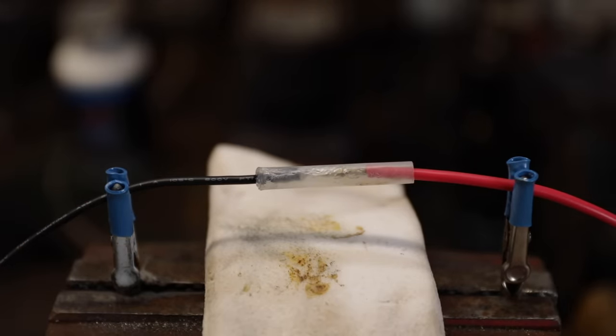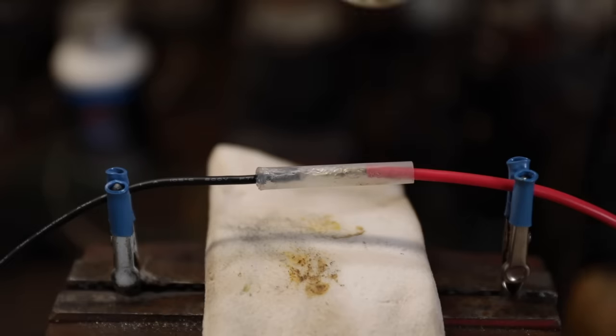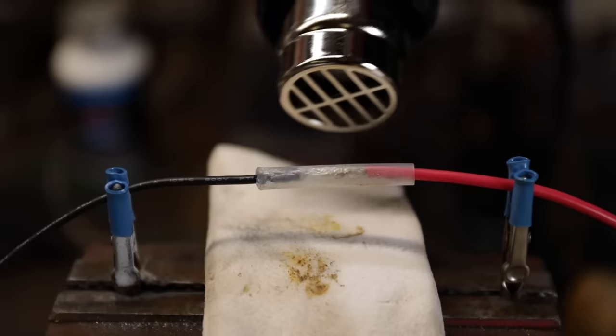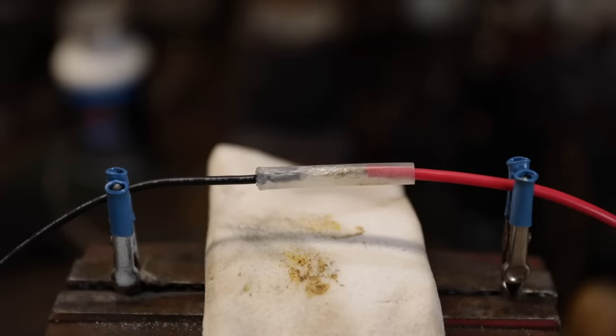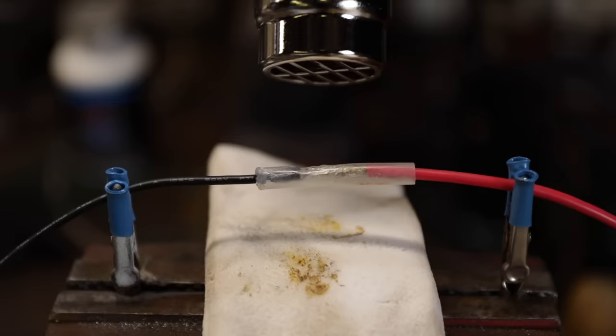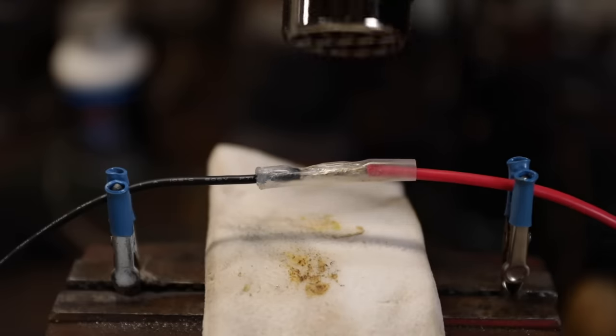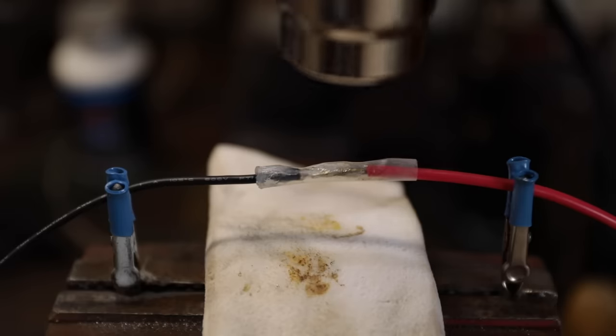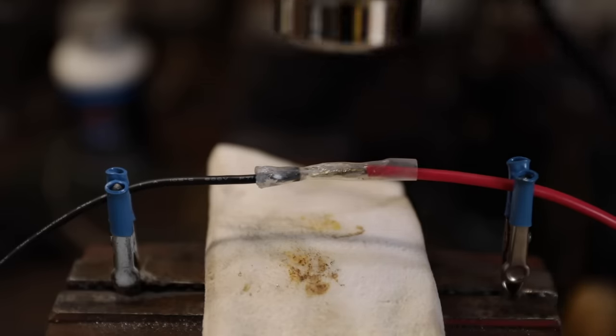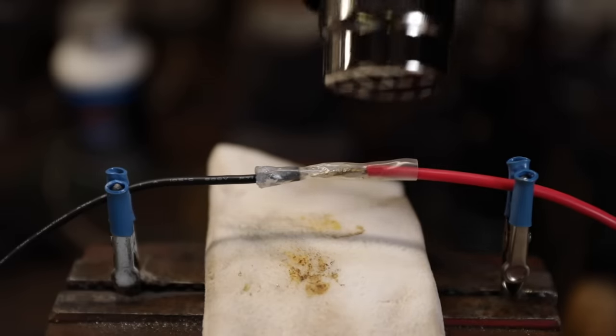You can use a lighter, you can use a torch. The problem with the lighter and the torch is if you're not really careful, it will tend to burn the wire in the housing. Start from the middle. You're going to start from the very middle, and you'll see that that's starting to shrink right there. And then work to the outside edges.